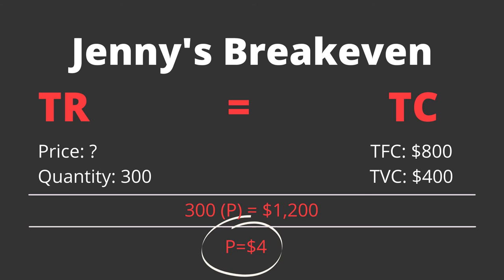We can express total revenue as 300P, because 300 is the quantity and P is the unknown price. We divide both sides by 300 to get P alone, giving us P equals $4. Jenny's breakeven price on a quantity of 300 is $4. So Jenny has to sell 300 bottles of shampoo at $4 a bottle in order to break even. If she's going to sell 300, she has to charge $4.